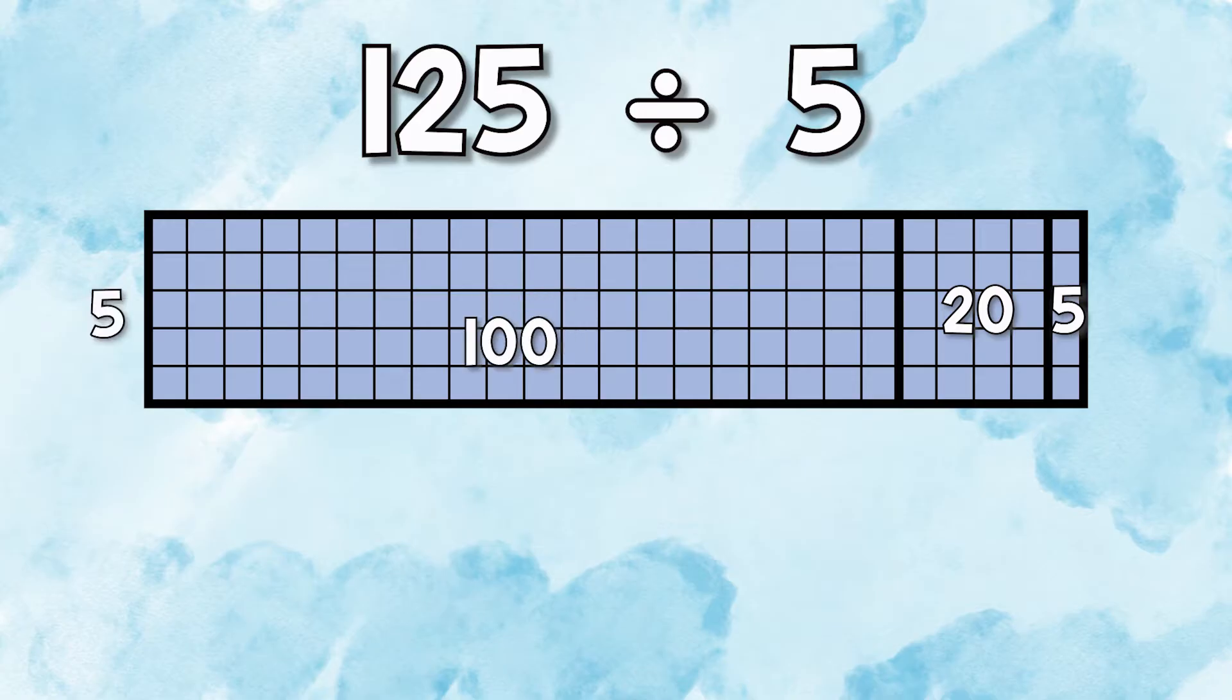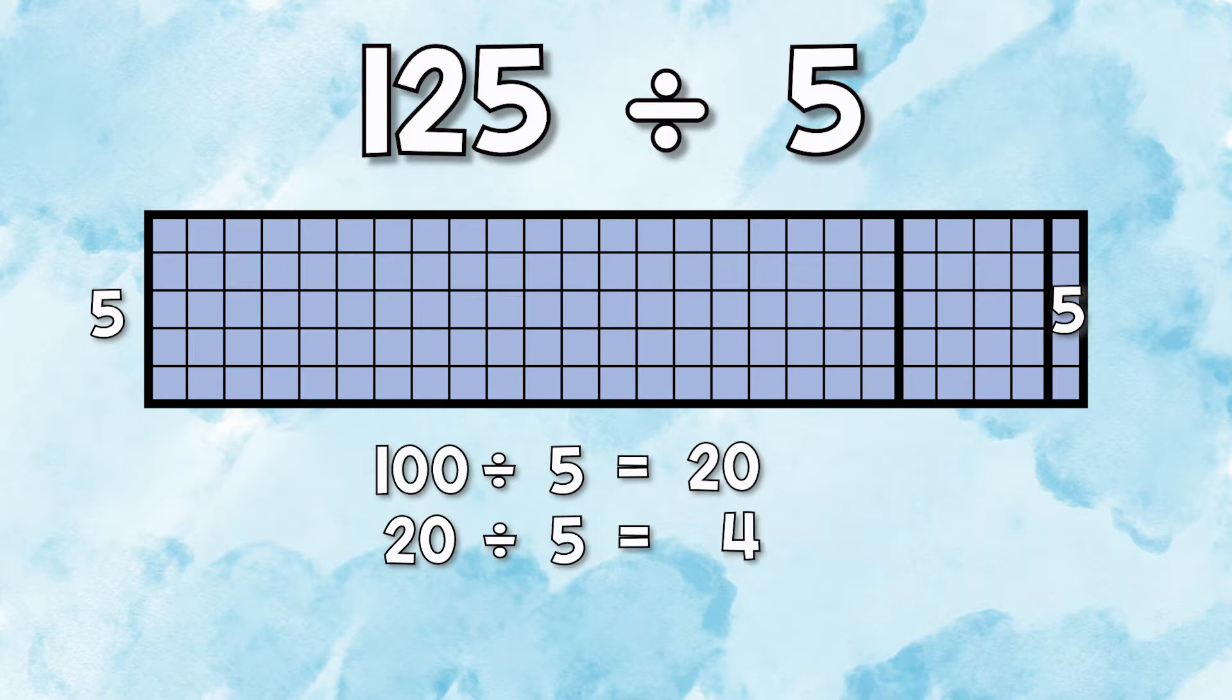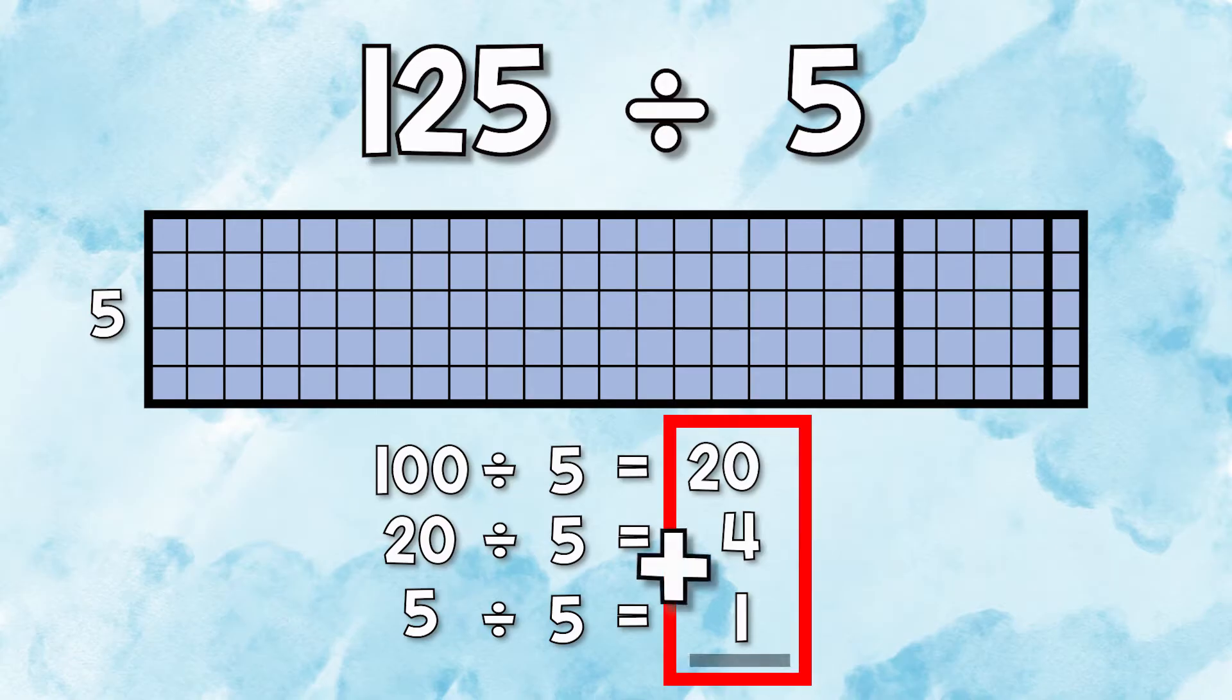Let's divide. 100 divided by 5 equals 20, 20 divided by 5 equals 4, and 5 divided by 5 equals 1. We're now going to take those partial quotients and add them up to get our final quotient. Here is your answer.